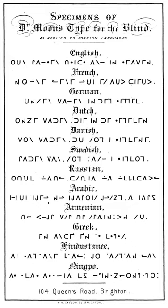Tone is marked sparingly. Chinese Braille punctuation approximates the form of international Braille punctuation, but several marks spread the corresponding dots across two cells rather than one. For example, the period uses the same dot pattern as the international single-cell norm.